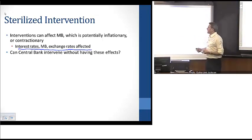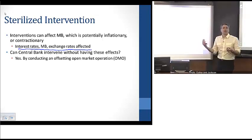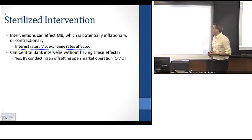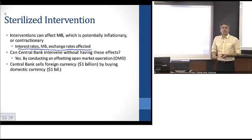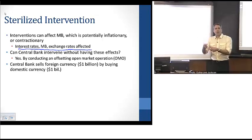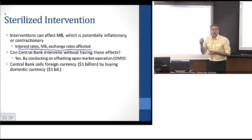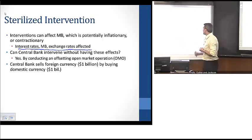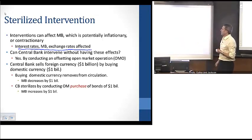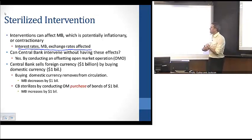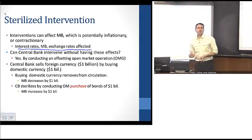In this case, the central bank can simply conduct offsetting open market operations — that's what the sterilization process is about. By buying and selling foreign currency and then offsetting that with an open market operation, the central bank can adjust its portfolio of assets without impacting the monetary base.